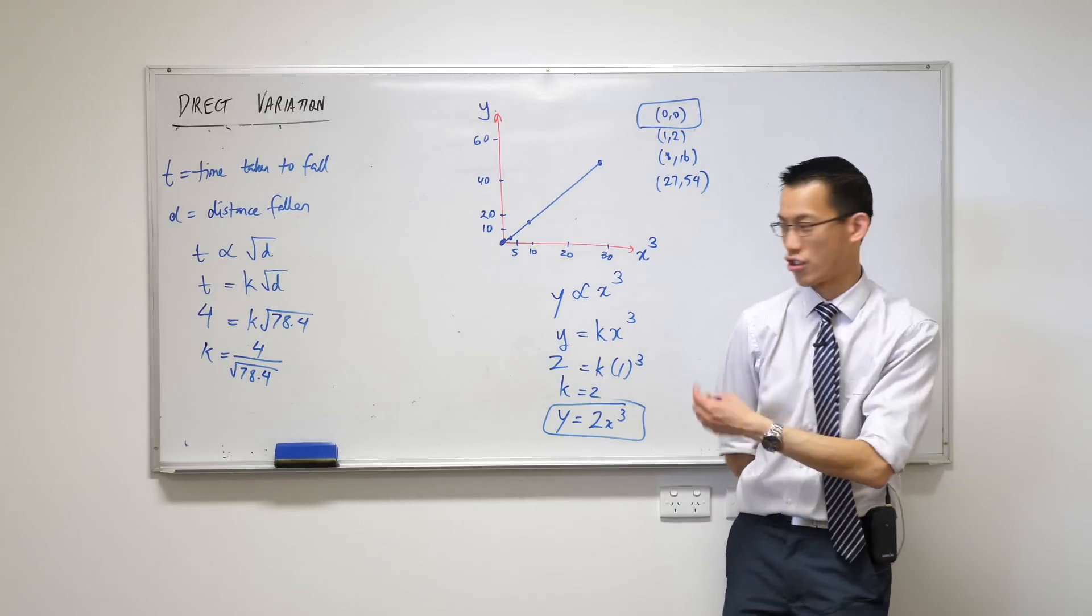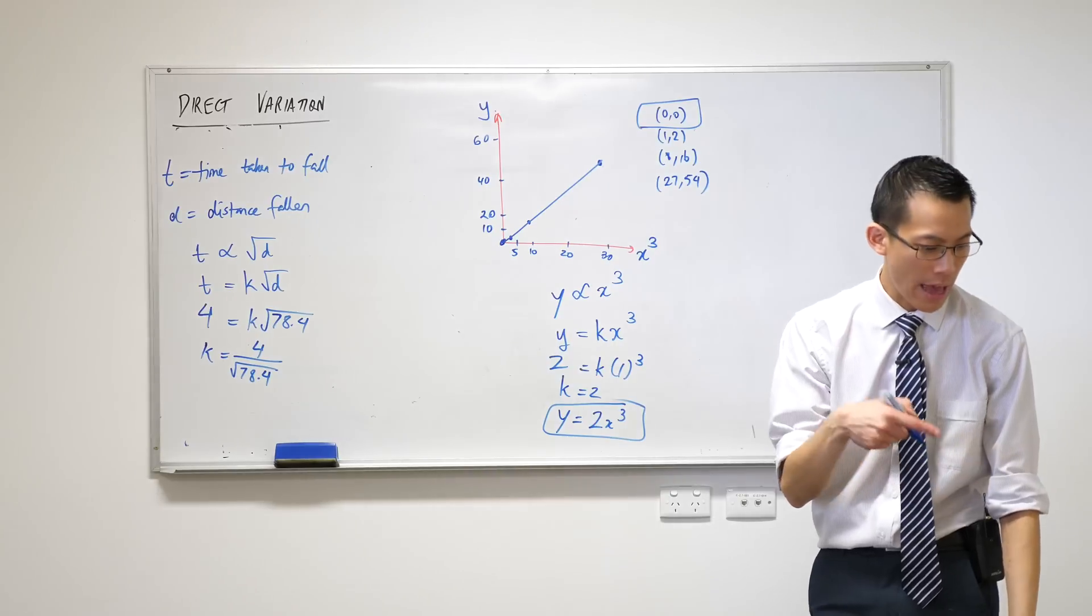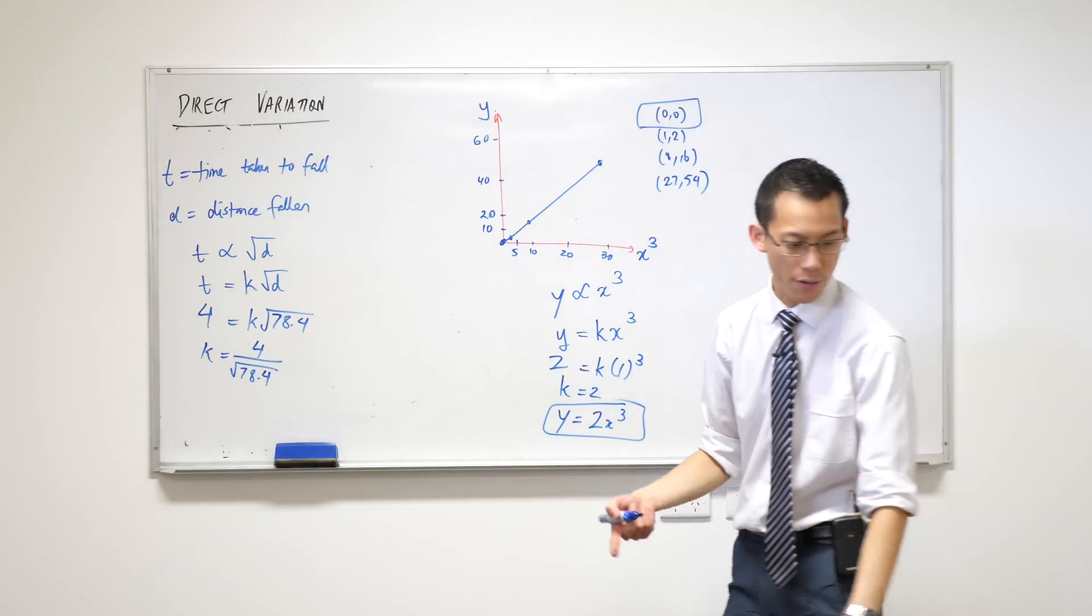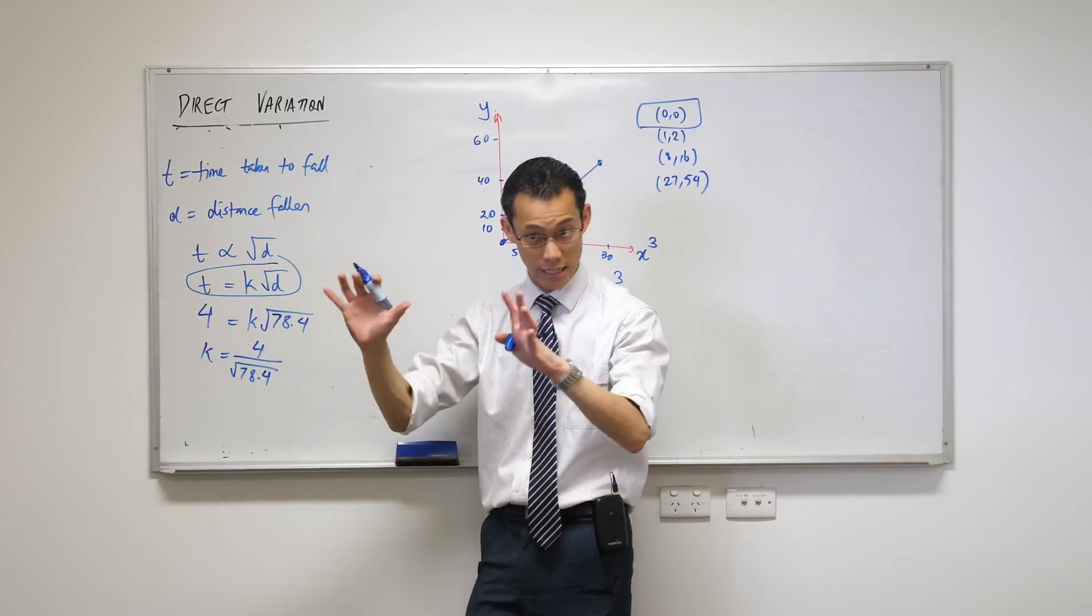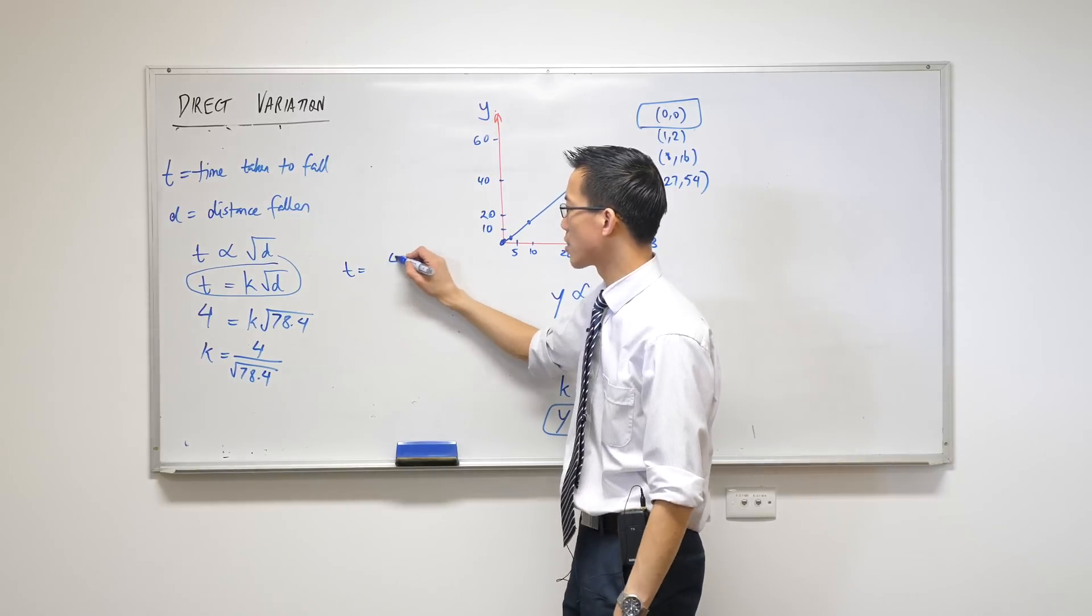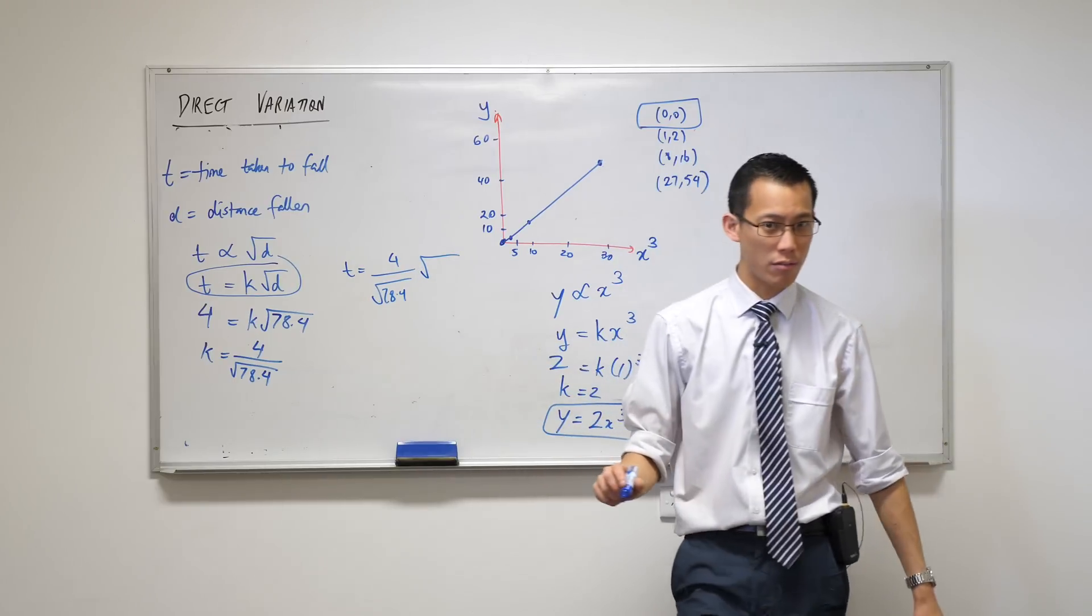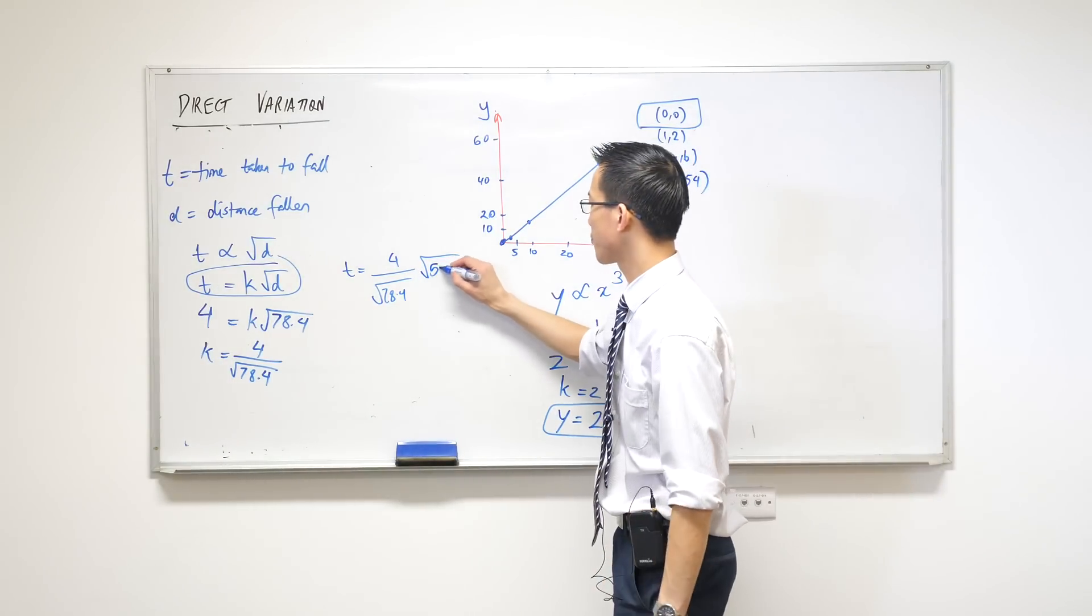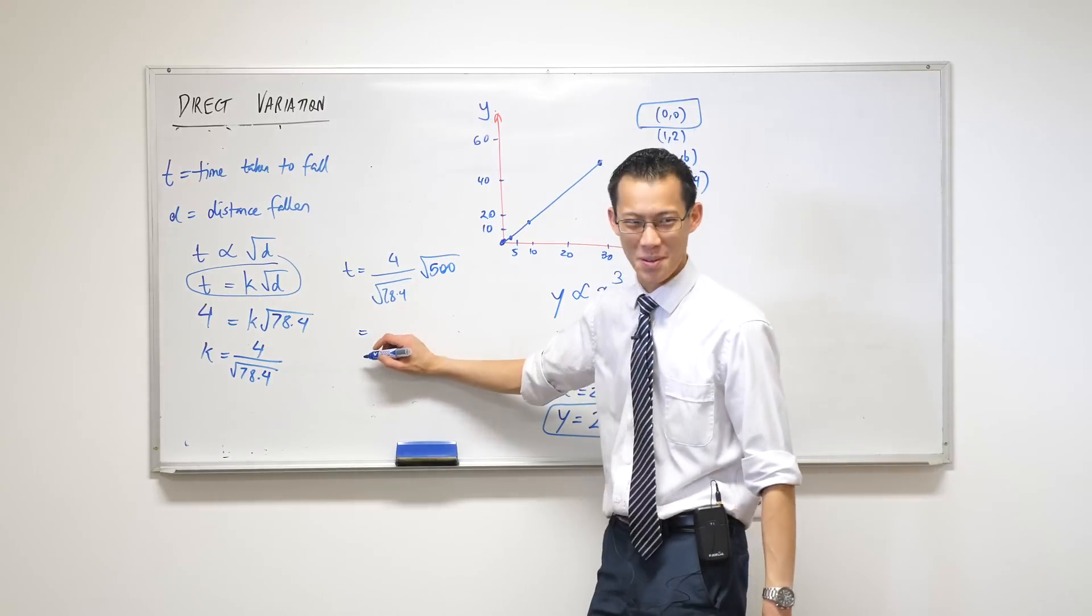Now they want to know how long - that's t, time - how long will it take for it to go 500 meters. So here's the last thing I said about t and d together. Using this, I can say that t is 4 over the square root of 78.4 times the square root of - what distance are we talking about right now? 500. And now the rest is calculator work.